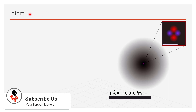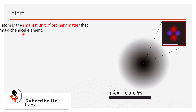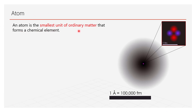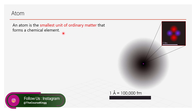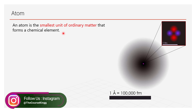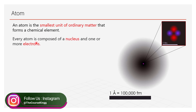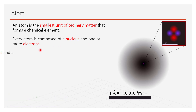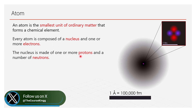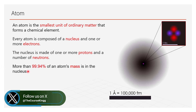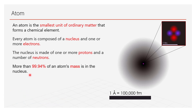First of all, we will discuss about atoms. An atom is the smallest unit of ordinary matter that forms a chemical element. Or we can say everything in the universe is made up of very tiny particles called atoms. Every atom is composed of a nucleus and one or more electrons. The nucleus is made up of one or more protons and a number of neutrons. More than 99.94% of an atom's mass is in the nucleus.